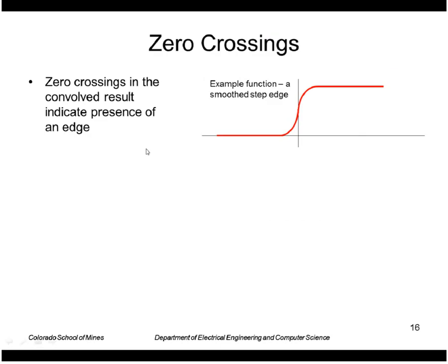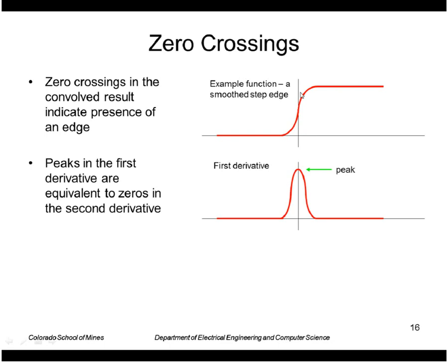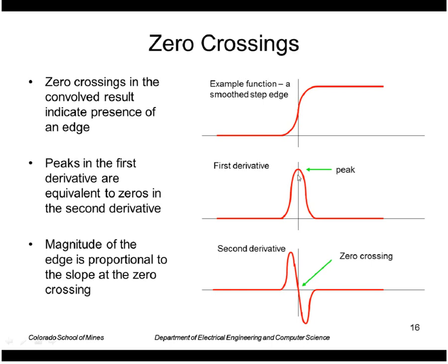To see how this would detect edges, let's see what would happen at a step edge. So let's say we have a step edge and we smooth it with a Gaussian. A first derivative would look like this. It would give us a peak at the location of the edge.